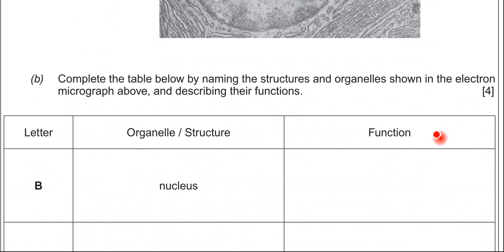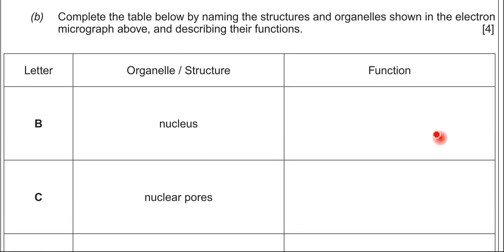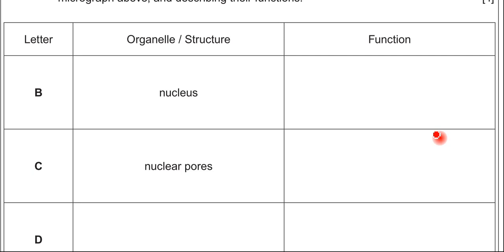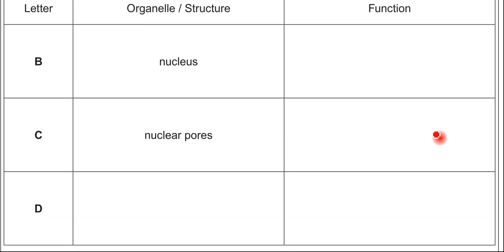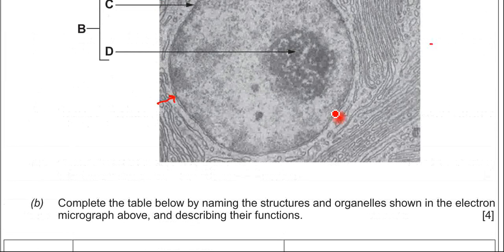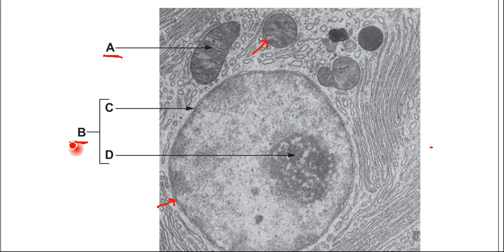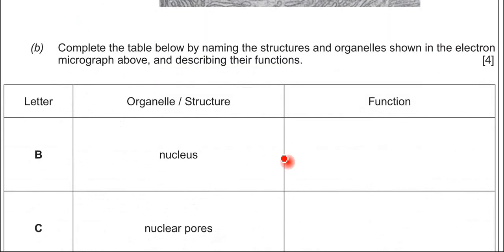So, the question then is a table. You have to complete the table now. For B and C, you need to state the function. And for D, you need to state the structure and then the function as well. So, B, collectively then, C and D make up the nucleus. The function of the nucleus is really, it contains the DNA, and DNA provides the code to make proteins, which is done by protein synthesis. You could also put in there that DNA replication occurs as well. So, really, the nucleus is there to code for and control protein synthesis.